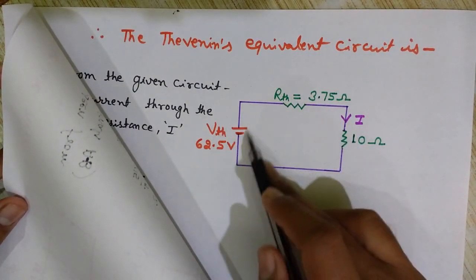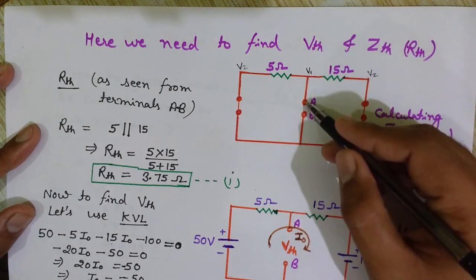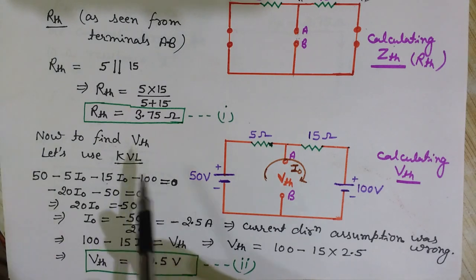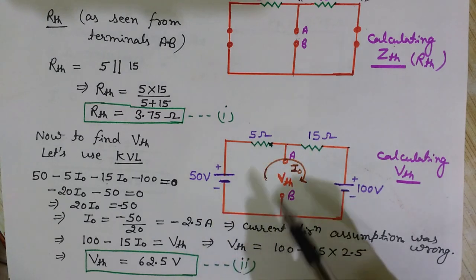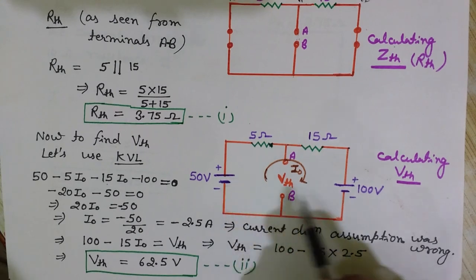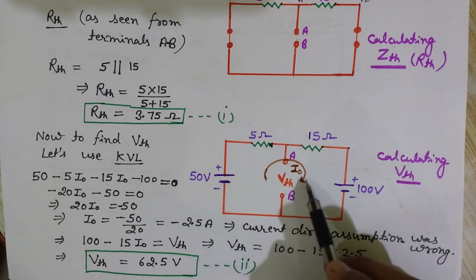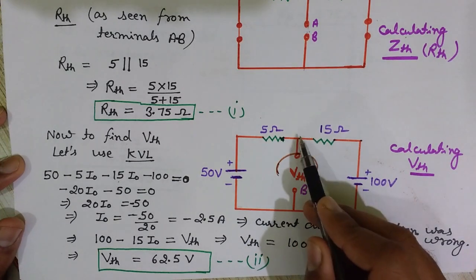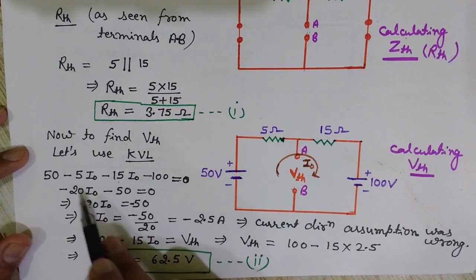Now I want to calculate V Thevenin — the potential difference across the AB terminals. For finding RTH we short-circuited the sources; now we use the full circuit with the 50 volt and 100 volt batteries, but we open-circuit the AB terminal. This gives a single loop. Let's say current I0 is flowing through it, and we will use KVL equations to find I0, then calculate the voltage across the two terminals.